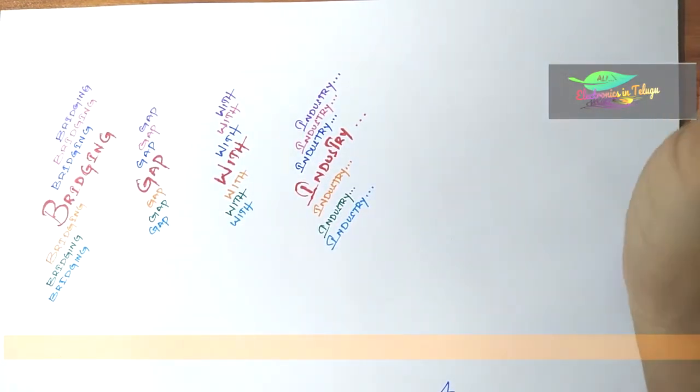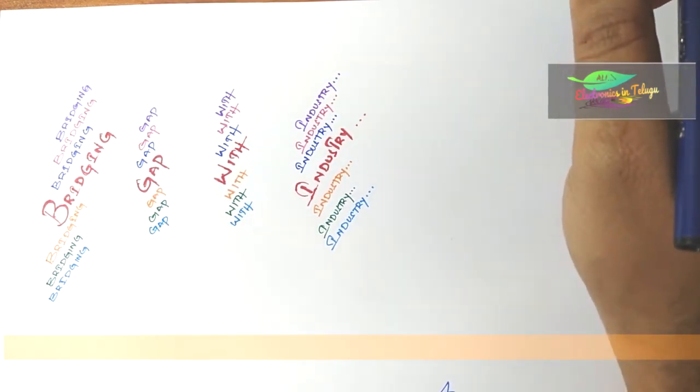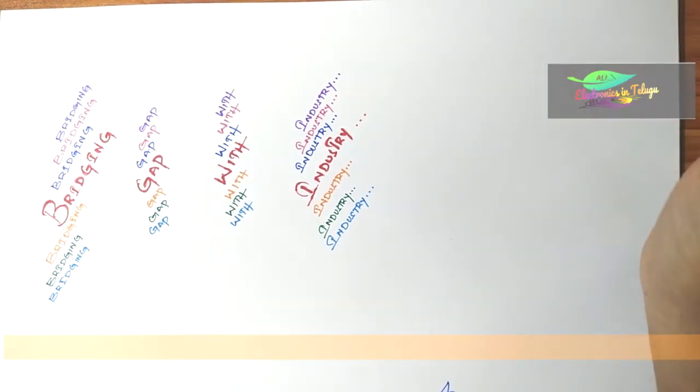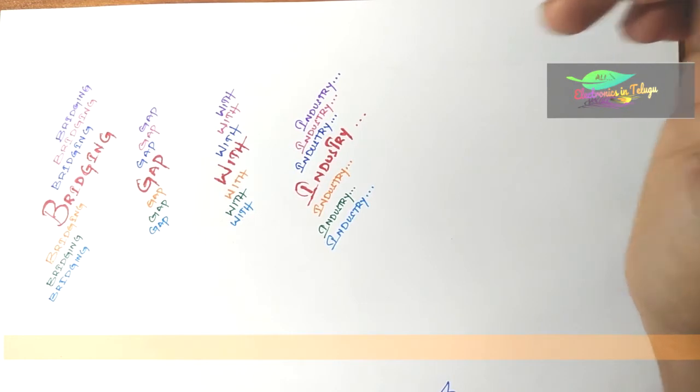Generally what I observe is that many students are well skilled and very talented, but still at the industrial orientation level, they're not aware of software. If you observe, out of 100%, 90% of students will move for software. The reason they move to software is because they don't have awareness about core companies. They don't have awareness about what happens in core companies. So to give that awareness, I have started this topic called Bridging Gap with Industry.